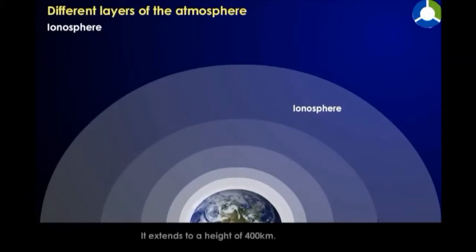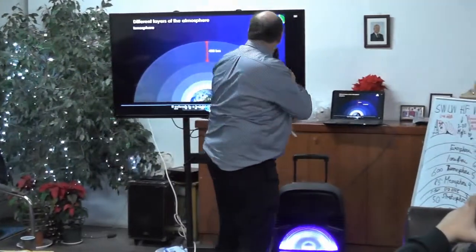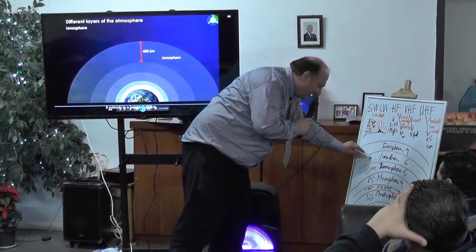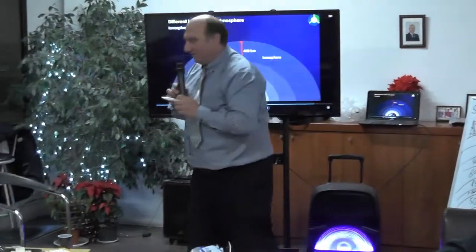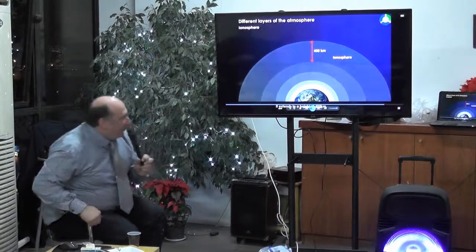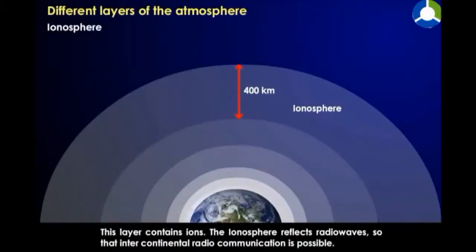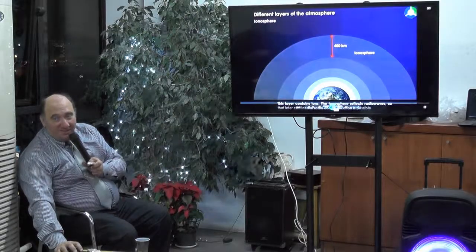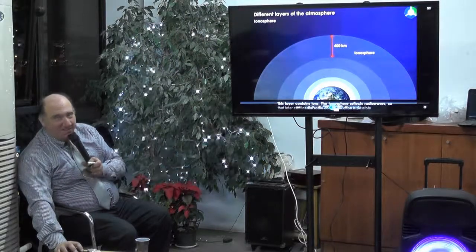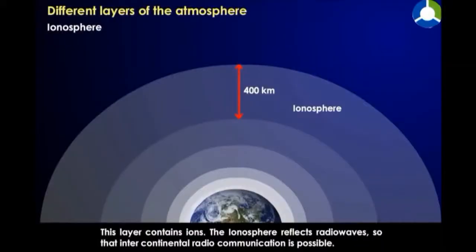Ionosphere. It extends to a height of 400 km. This is the sixth layer — the ionosphere. This layer contains ions. The ionosphere reflects radio waves. Keep this in mind — that intercontinental radio communication is possible because of this layer.